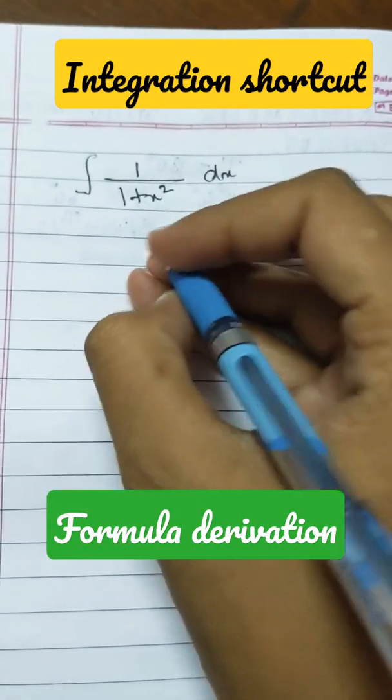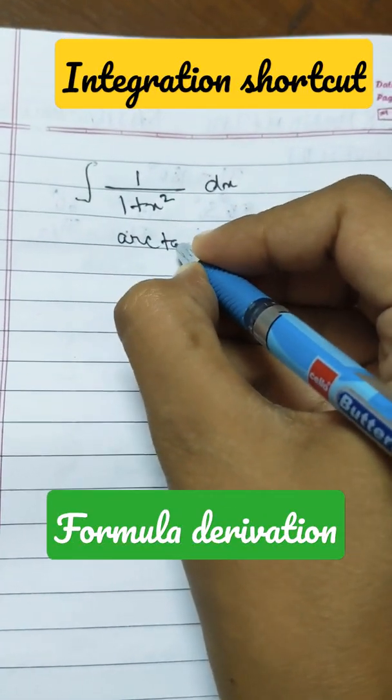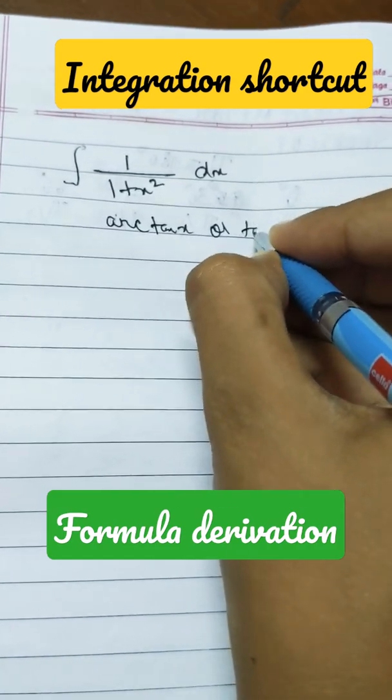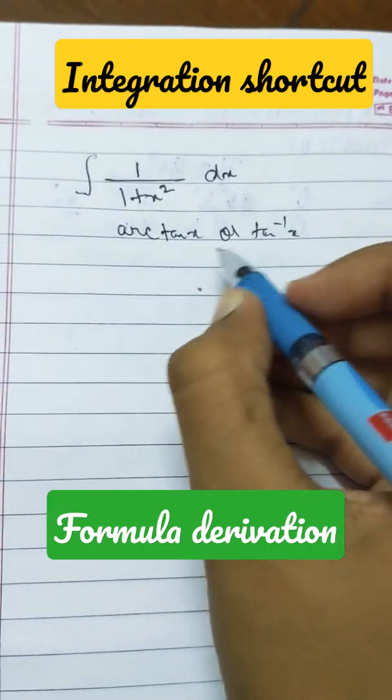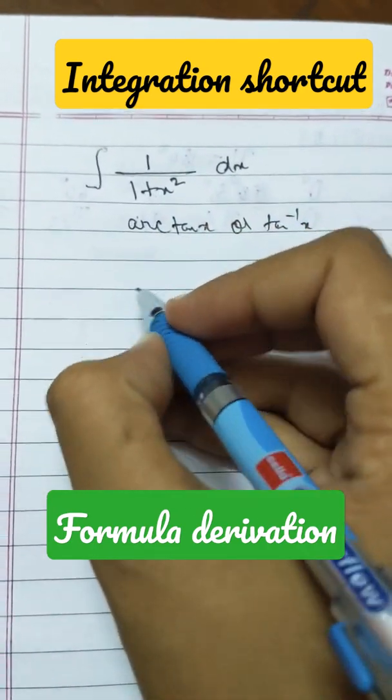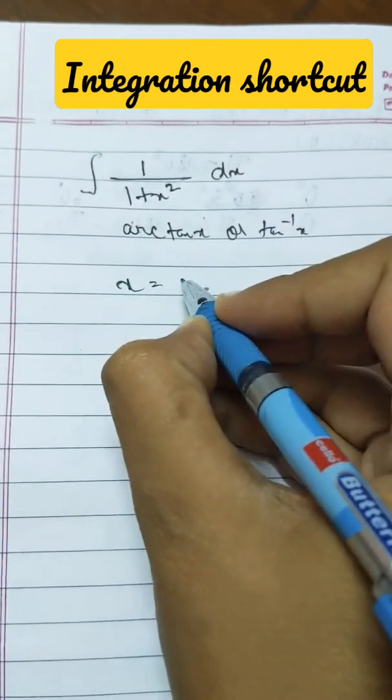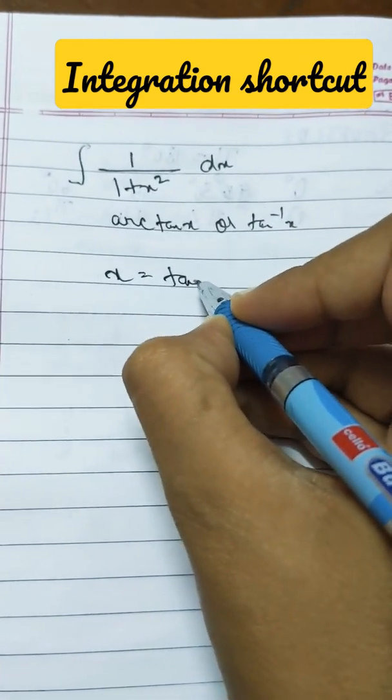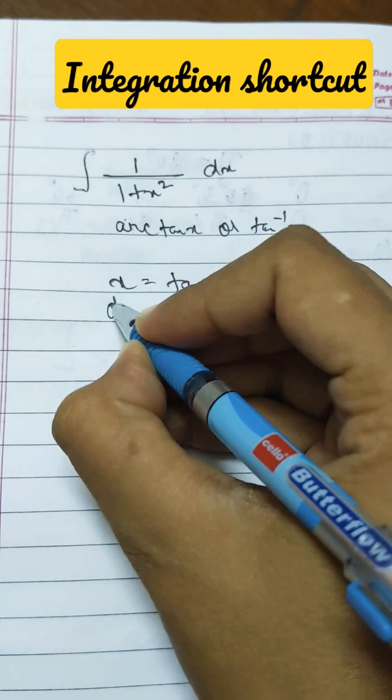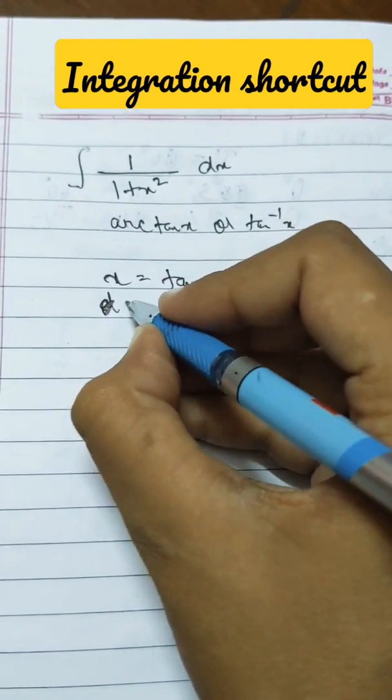The direct formula for this integral would be arctan(x) or tan inverse x. But how would we do this if we don't know the formula? You can substitute x as tan(u), and then differentiating on both sides...